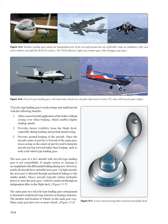The nose gear of a few aircraft with tricycle-type landing gear is not controllable — it simply castors as steering is accomplished with differential braking during taxi. However, nearly all aircraft have steerable nose gear. On light aircraft, the nose gear is directed through mechanical linkage to the rudder pedals. Heavy aircraft typically utilize hydraulic power to steer the nose gear, with control achieved through an independent tiller in the flight deck. The main gear on a tricycle-type arrangement is attached to reinforced wing or fuselage structure.